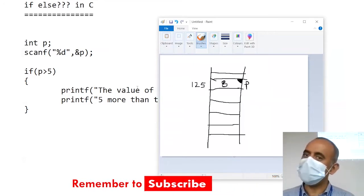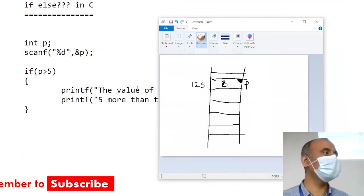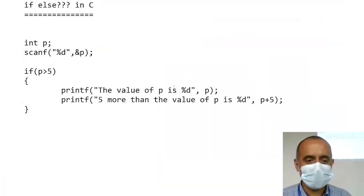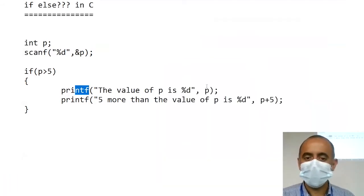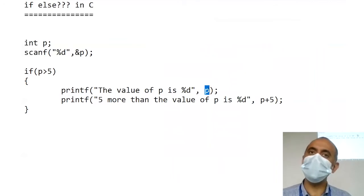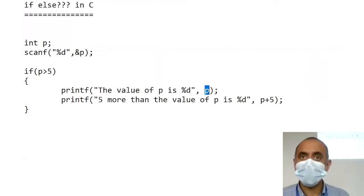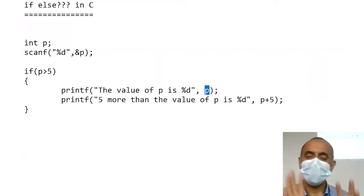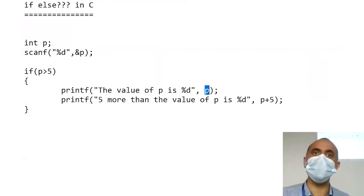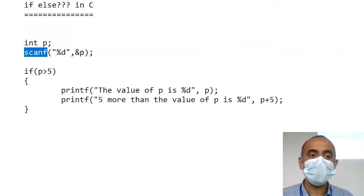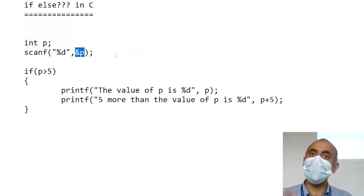With the ampersand, what value does scanf receive? 125 — which is the address. For example, when we write printf, printf says it needs the direct value. So p's value, which is 8, goes to printf. Printf's design requires the value. Scanf's design and definition requires not p's value, but its address.